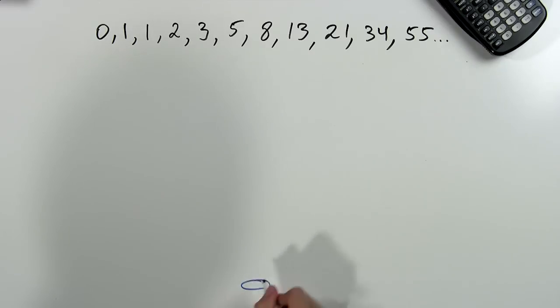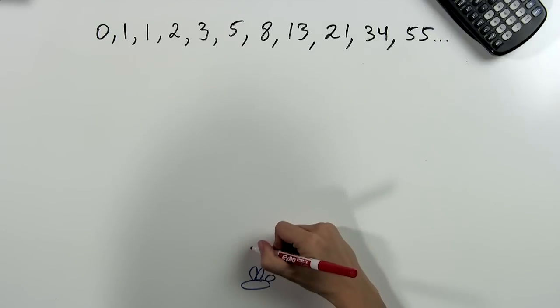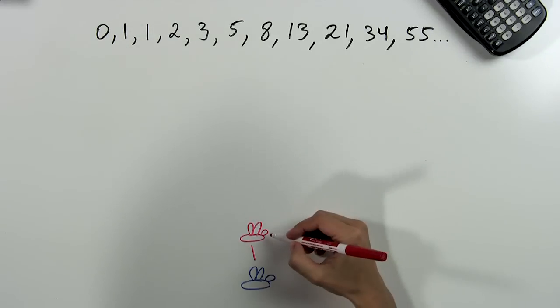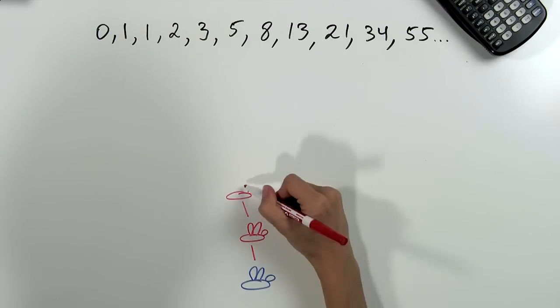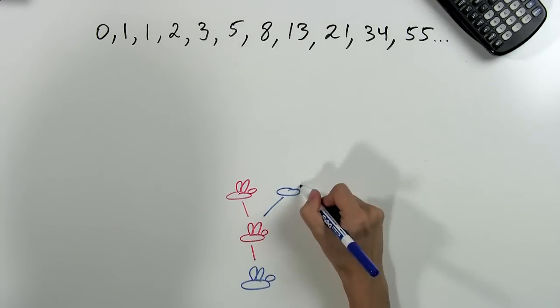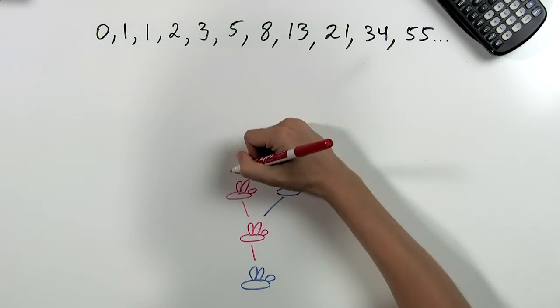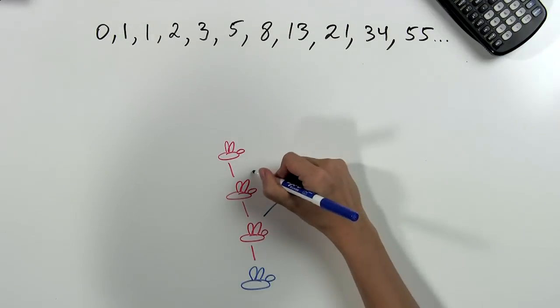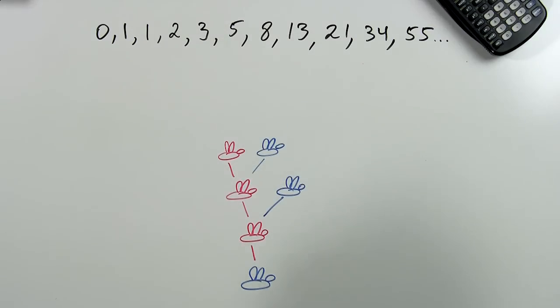Now let's imagine one male bee. Since he's a male, he has only one parent, a female. Since this is a female, she has two parents, a female and a male. This female also has two parents. But this male only has one.